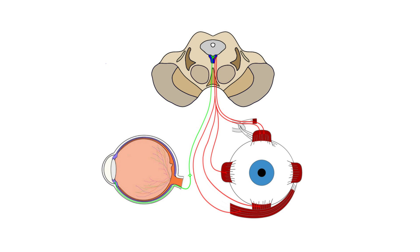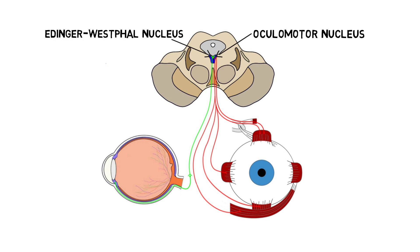Oculomotor nerve fibers originate in the oculomotor nucleus in the midbrain. From here they travel to the orbit of the eye, along the way separating into branches that control the different extraocular muscles. The fibers that control the pupillary sphincter and ciliary muscle originate in the Edinger-Westphal nucleus and travel with the oculomotor nerve.